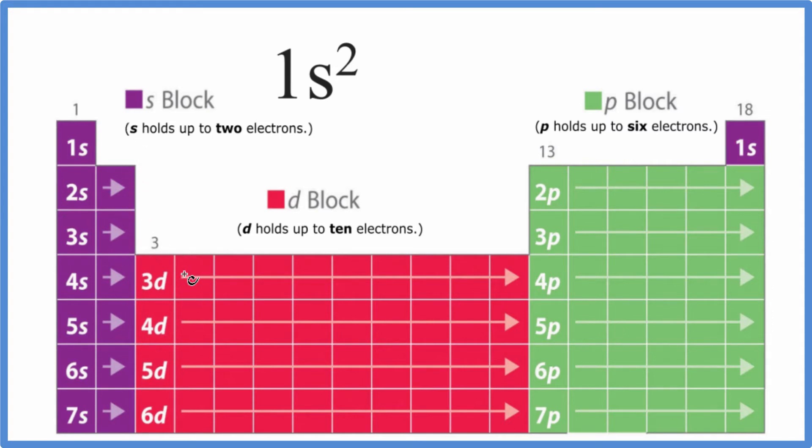When we get over to the d block, since d holds up to 10 electrons, we have d1 all the way to d10. And then for p, holds up to 6, p1, 2, 3, 4, 5, 6.